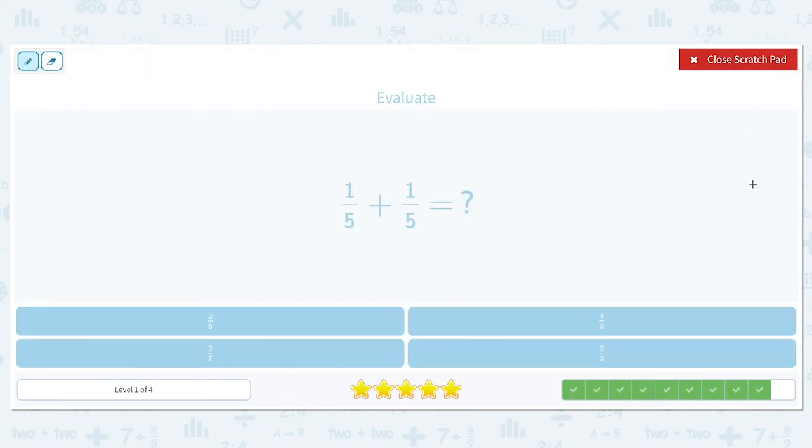One fifth plus one fifth. Our denominators are the same. And one plus one equals two, so our final answer is two fifths.